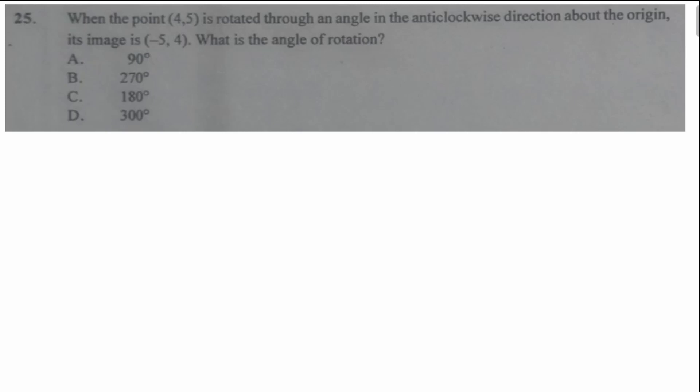And the question reads that when the point with coordinate (4, 5) is rotated through an angle in the anti-clockwise direction about the origin, its image is (-5, 4). What is the angle of rotation? We take the key facts from this problem. The first one is that the coordinate of the point is (4, 5) and that of the image is (-5, 4).